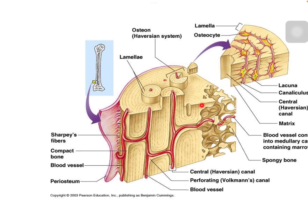The inner zone is formed of the endostium, which lines the bone marrow cavities or the inner surface of the bone. Deep to the endostium lies a layer similar to the outer circumferential lamellae, but because it is deep to the endostium, it is called the inner circumferential lamellae.